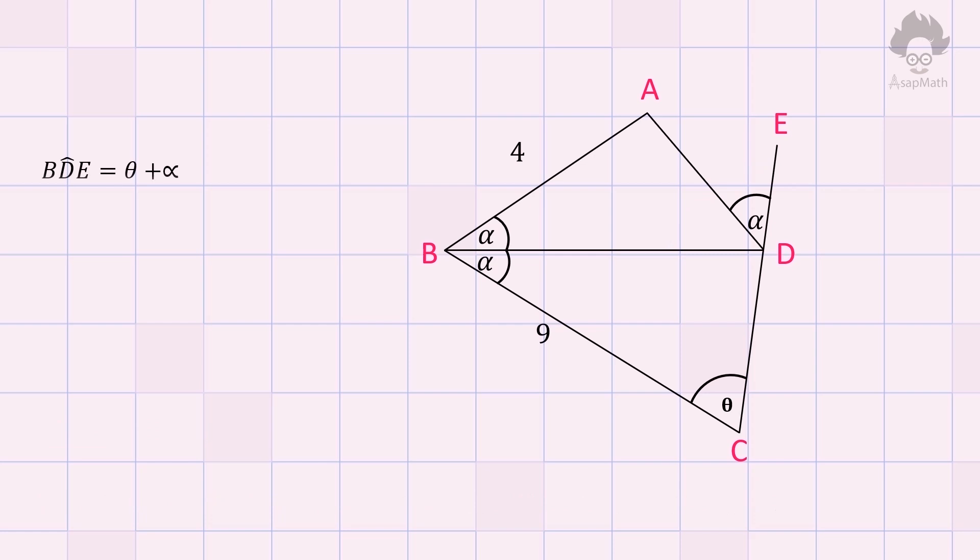As angle ADE is alpha, angle BDC should be equal to theta. Now we have found out that two angles ABD and BCD are equal, so the remaining angles are also equal, and we can conclude that the two triangles are similar triangles.